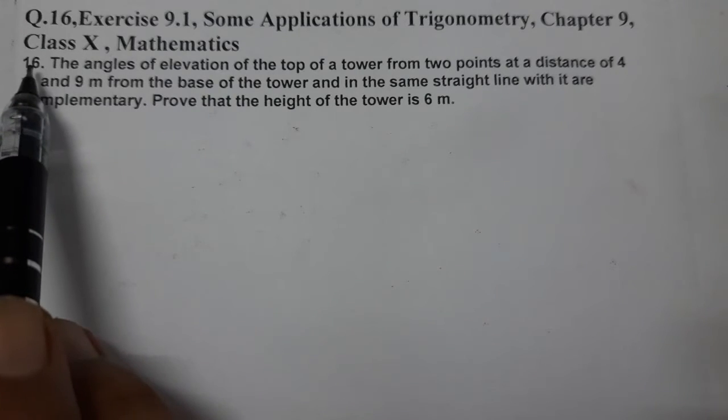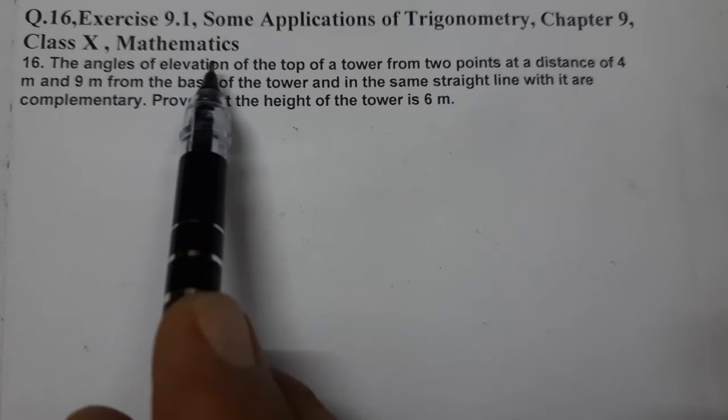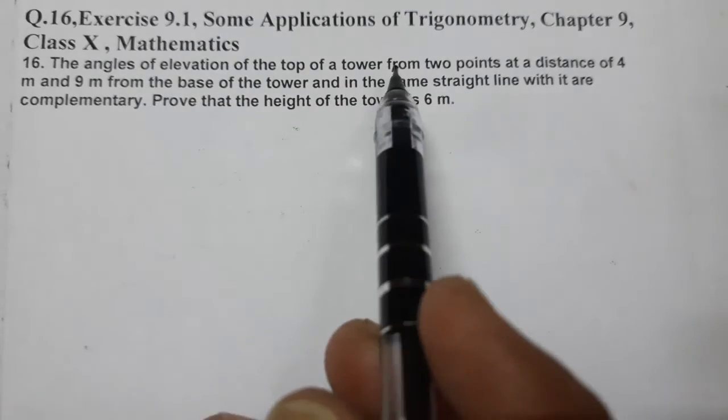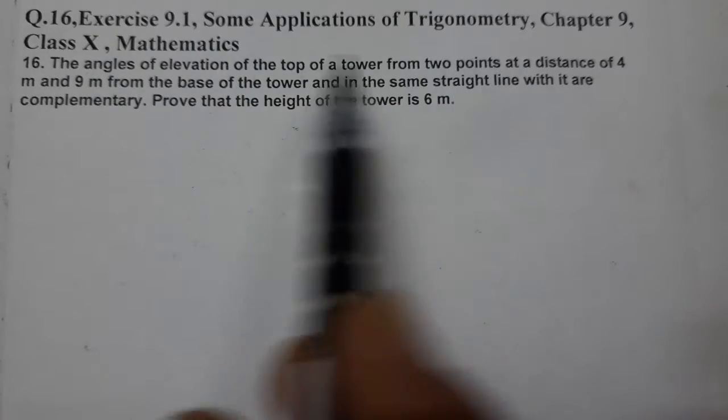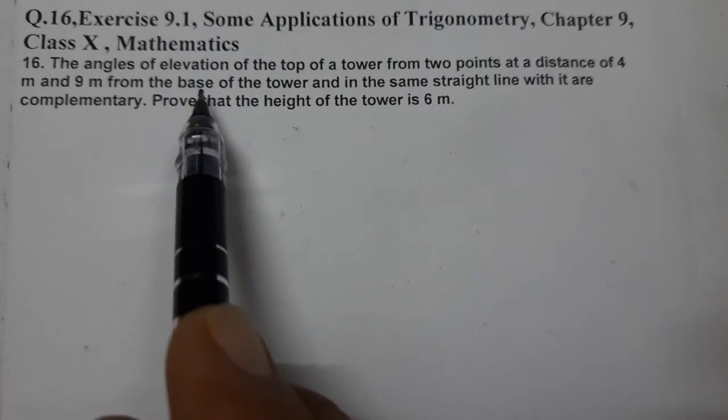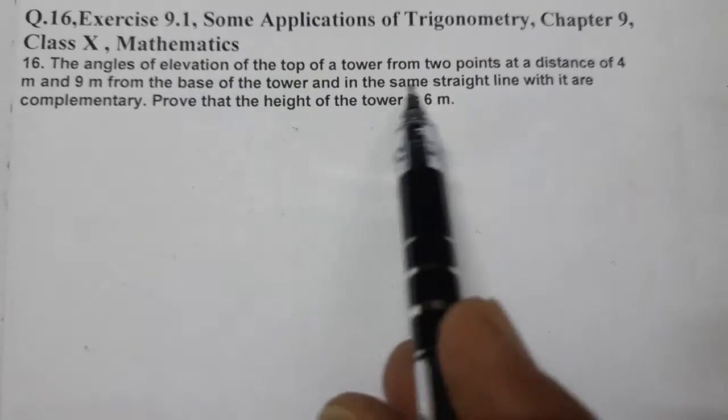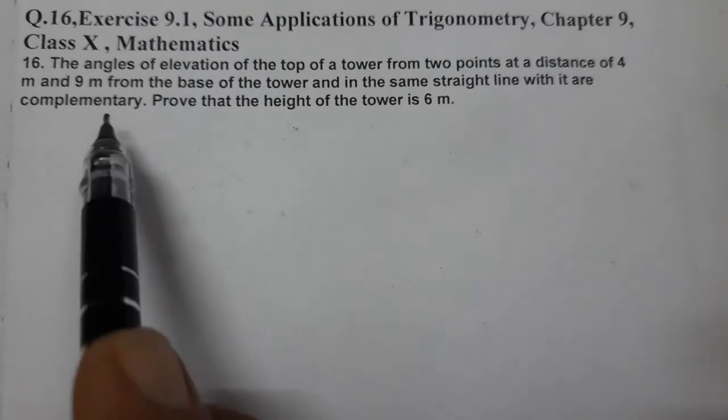Question 16: The angles of elevation of the top of a tower from two points at a distance of 4 meters and 9 meters from the base of the tower and in the same straight line with it are complementary.